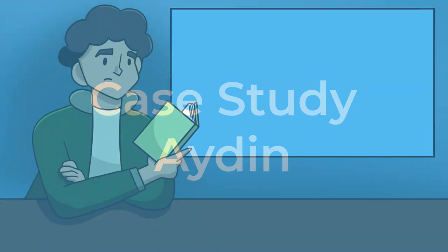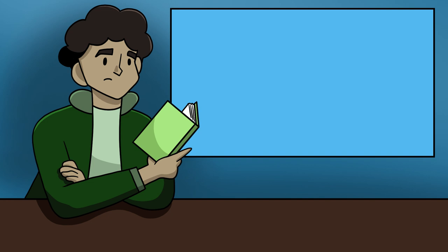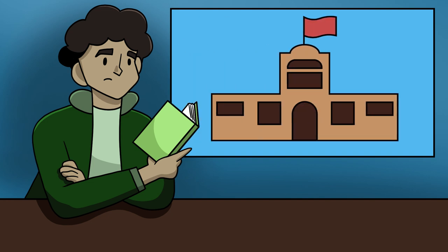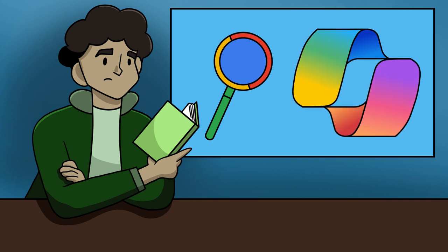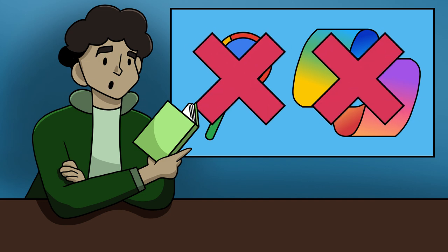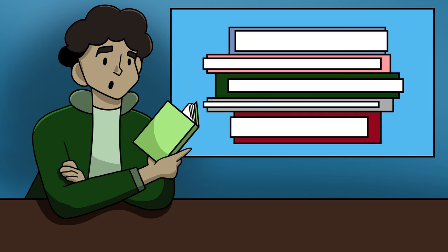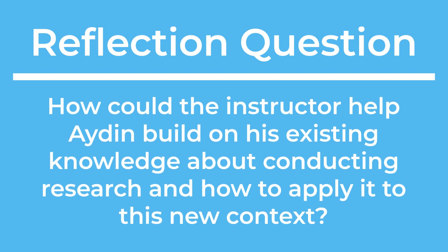Case study: Aiden. Since Aiden is in his first semester, he hasn't conducted academic research since high school — all he remembers is that he shouldn't use Wikipedia. While he spends a fair amount of time looking up information on Google and Copilot, Microsoft's AI tool, the assignment for the Innovation Shaping the Modern World course explicitly states that these tools are not permitted. Instead, he must use only library resources, but after an initial search of the library, he feels lost and confused. Reflection question: How could the instructor help Aiden build on his existing knowledge about conducting research and apply it to this new context?